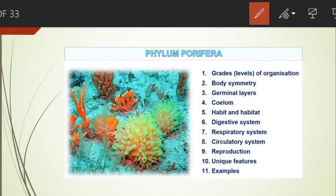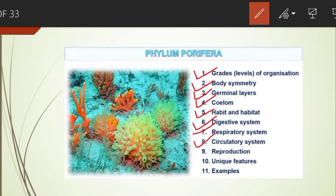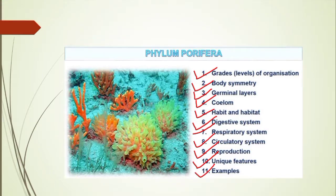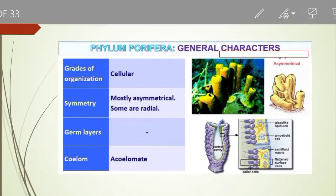About this phylum we are going to study different characteristics — features or basis of classification. These include: grades of organization, body symmetry, germinal layers, coelom, habit and habitat, digestive system, respiratory system, circulatory system, and reproductive system. We will also study some unique features of the members belonging to this phylum and lastly the examples. So let us study Phylum Porifera in detail.